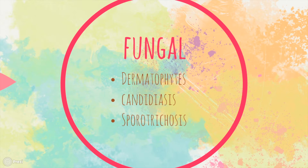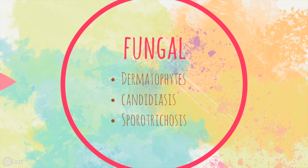Sporotrichosis, or rose gardener's disease, is a subcutaneous lesion or ulcerated nodule. It is a fungal infection acquired by those with contact to soil or vegetation such as moss, hay and rose bushes. The fungus causing the infection is Sporothrix schenckii. It is usually associated with minor cuts and abrasions occurring while handling soil, plants, or from a cat scratch.